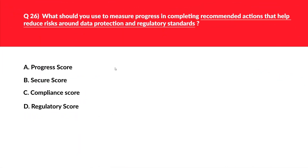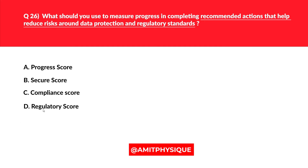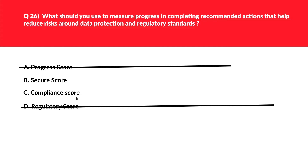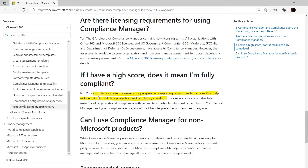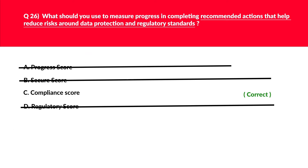This question is related to recommended actions that can help reduce risk around data protection and regulatory standards. There is no such thing as progress score or regulatory score — those are just distractors, so we reject options A and D. Option C is compliance score — compliance score can be used to measure progress to mitigate risk related to regulatory standards, making it a potential answer. Option B is secure score, which measures an organization's security posture with a higher number indicating more improvement actions taken. That seems incorrect here. The official documentation confirms compliance score measures progress in completing recommended actions that help reduce risk around data protection and regulatory standards. We'll lock this.